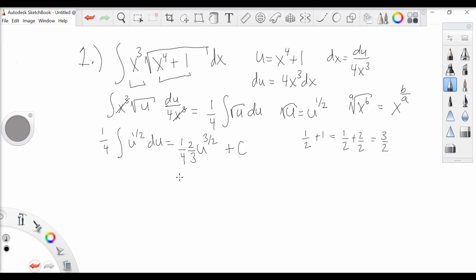We want to finish in terms of x, so let's go back. Remember that u is really x to the fourth plus one. Finally, simplifying, we have a two cancel, and we're left with x to the fourth plus one to the three-halves all over six plus c.